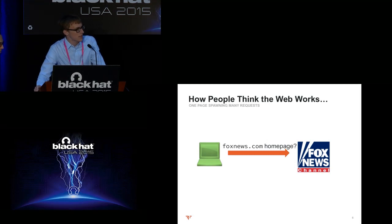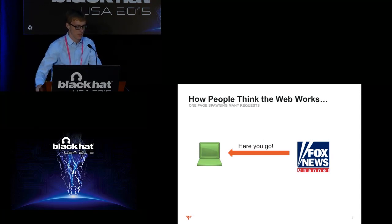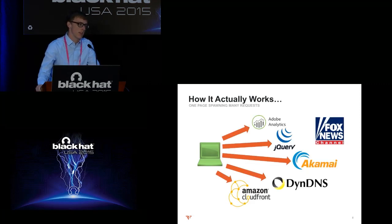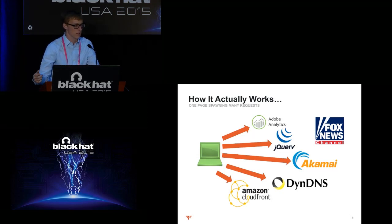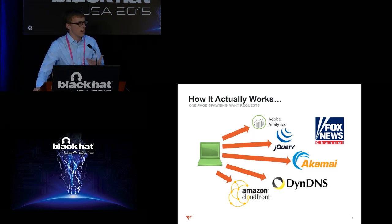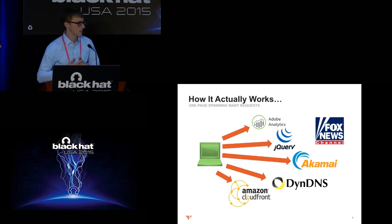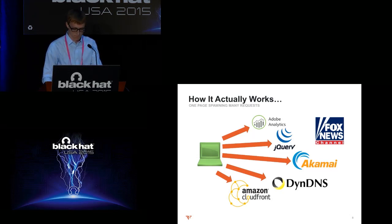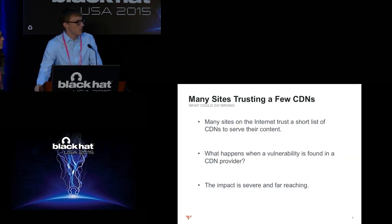Many people think of the web like this: you type foxnews.com, hit enter, the request goes to Fox, they return a web page — that's the whole transaction. But Fox News takes advantage of many third-party services. They use things like Adobe Analytics to gather statistics on their customer base, Akamai CDN to serve web content, and even DNS services like 9DNS — all coming together to deliver the final product.